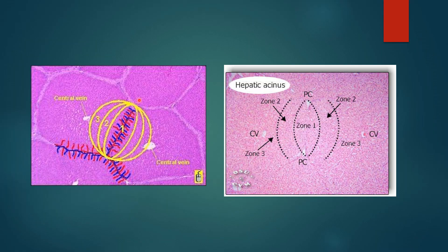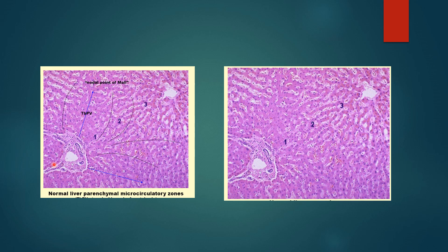In diagrams, the short axis and long axis of the acinus can be appreciated, with zone 1, zone 2, and zone 3 shown alongside portal areas and central veins. In histological H&E sections, the portal area is visible with zone 1 close to the anastomosing branches between portal areas, zone 2 intermediate, and zone 3 close to the central vein or terminal hepatic venule.